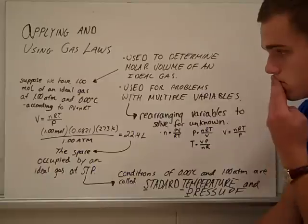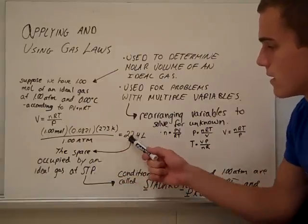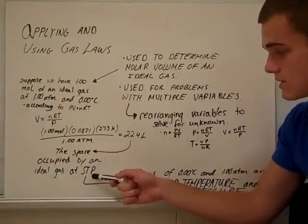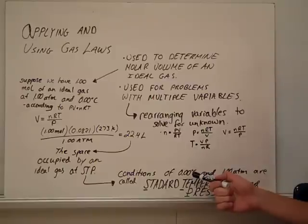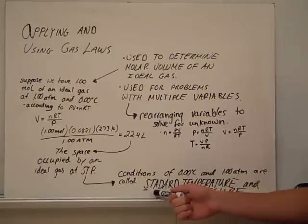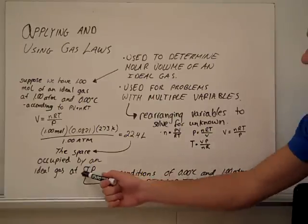Those are the liter atmospheres. And we get 22.4. This is the space occupied by an ideal gas at STP. And the conditions of 0.00 degrees Celsius and 1.00 atm are called standard temperature and pressure, STP.